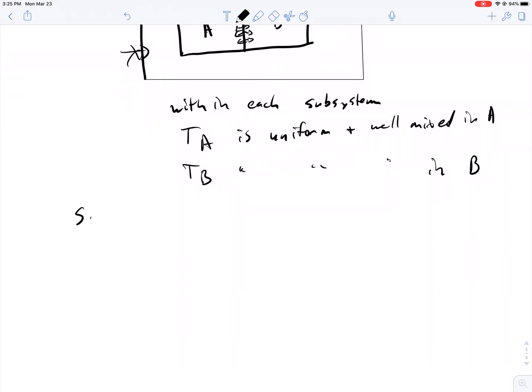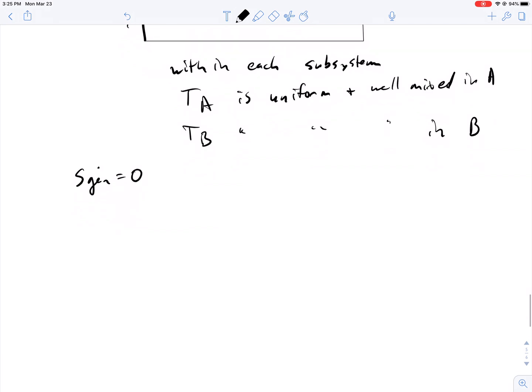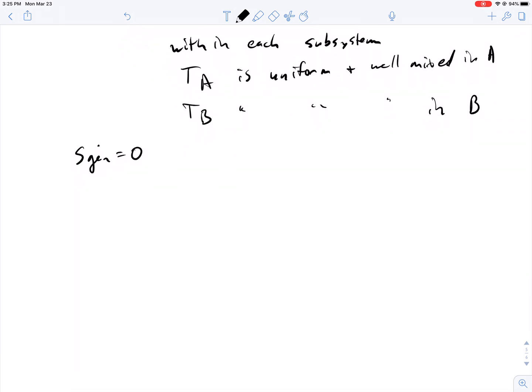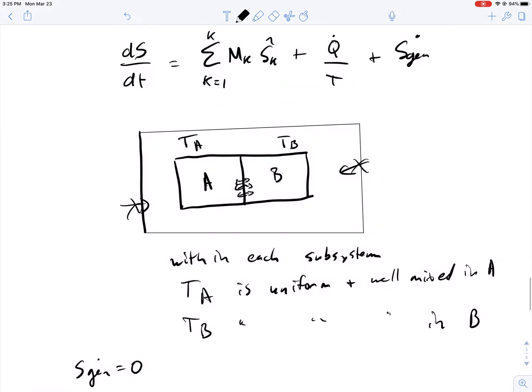If there are no gradients, then we can set for the individual two sides the S-gen term equal to zero, because there are no irreversibilities in that example. So, based on our entropy equation that is right here, we have no mass flow, so we can cross this out.